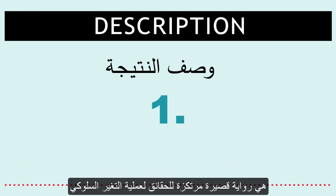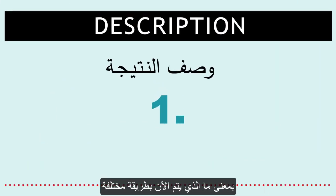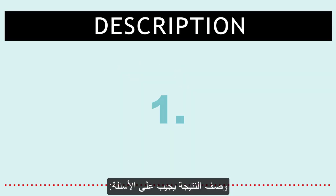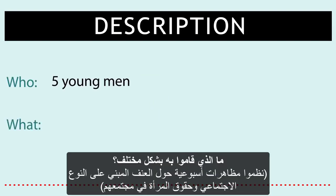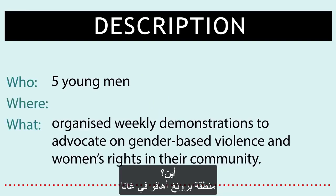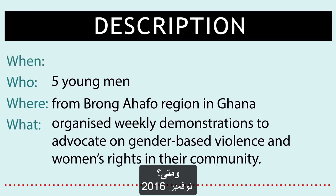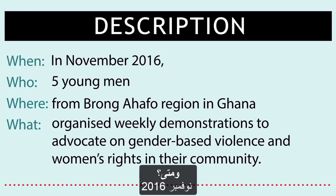The outcome description is a short and factual narrative of a behavioural change, meaning what people are doing differently. The outcome description answers the questions: who changed? What did they do differently? Where? And when? You will find that it takes some time and discussion to write a good quality outcome description.